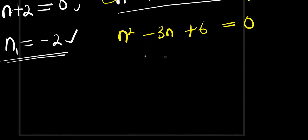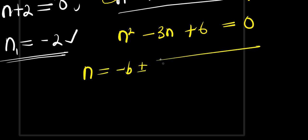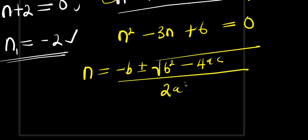With this quadratic equation, I can solve for n using the formula method. n = (-b ± √(b² - 4ac)) / 2a.